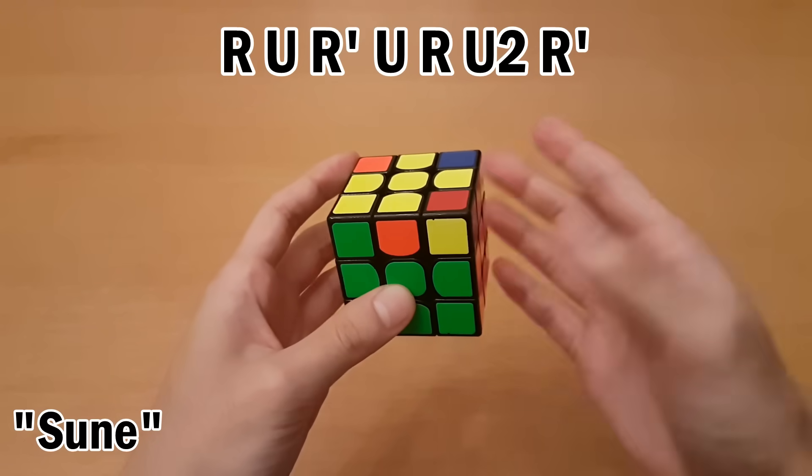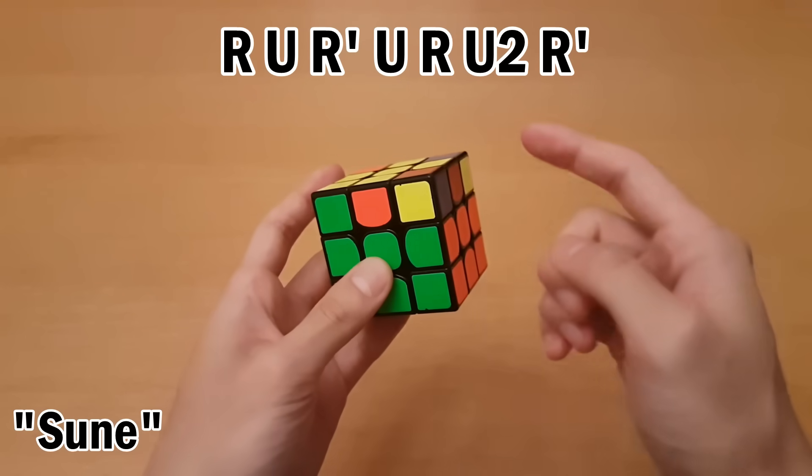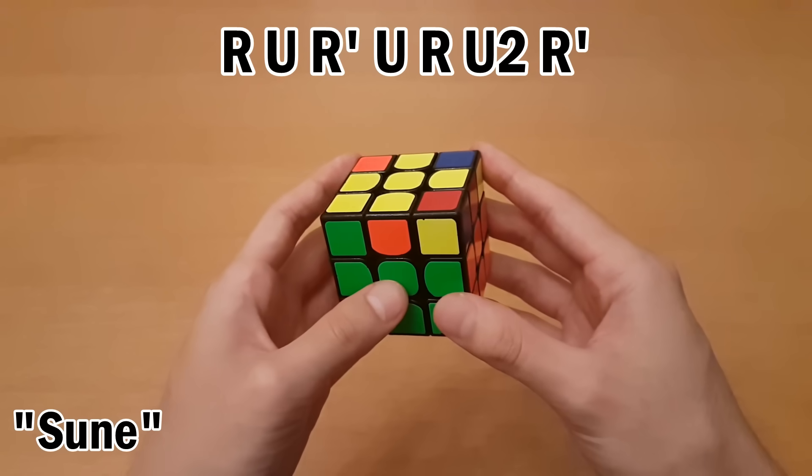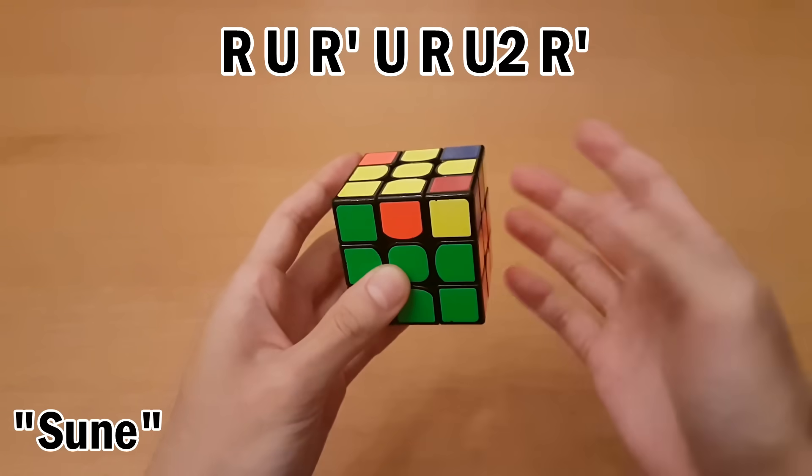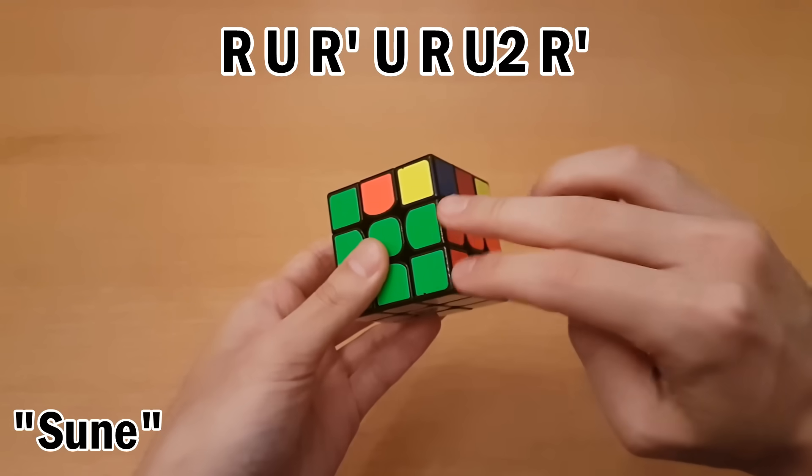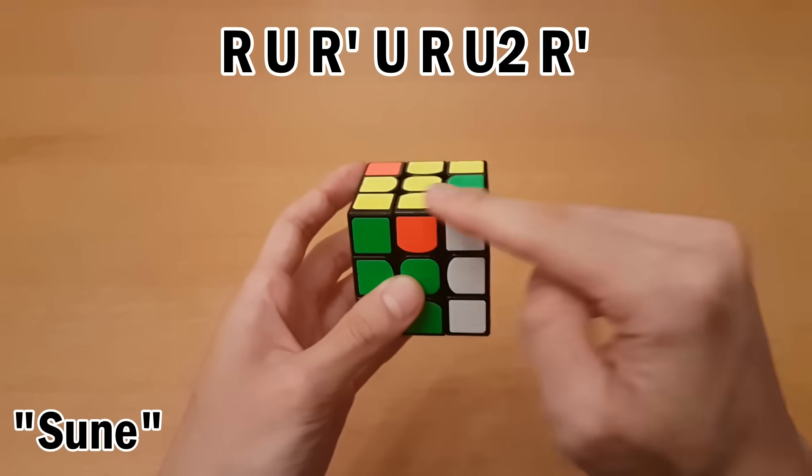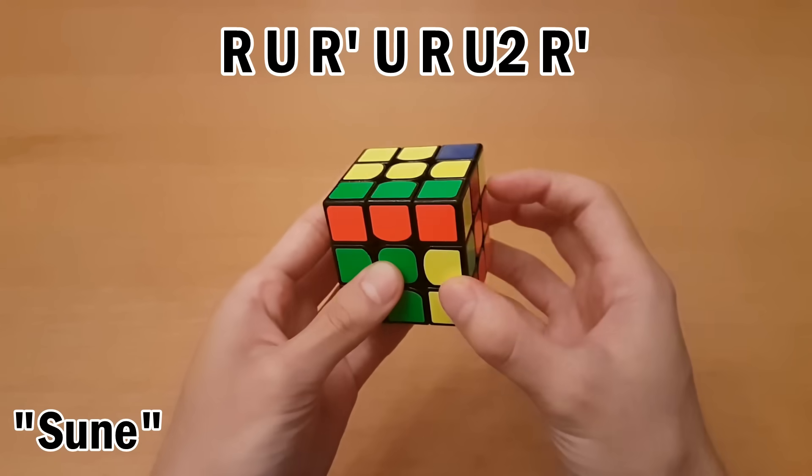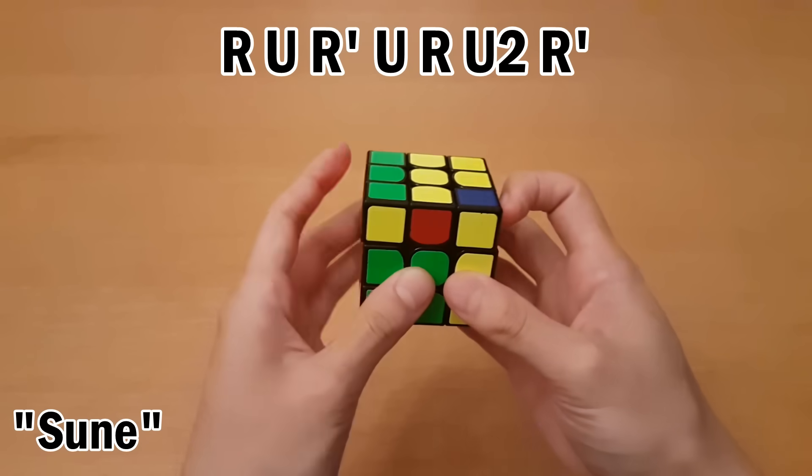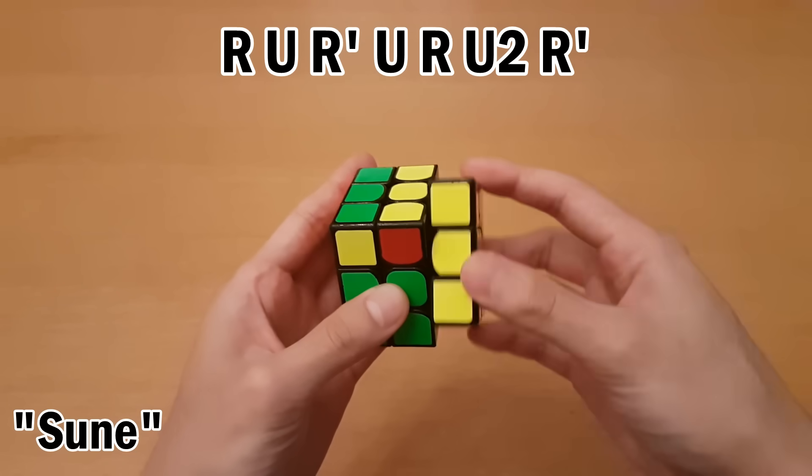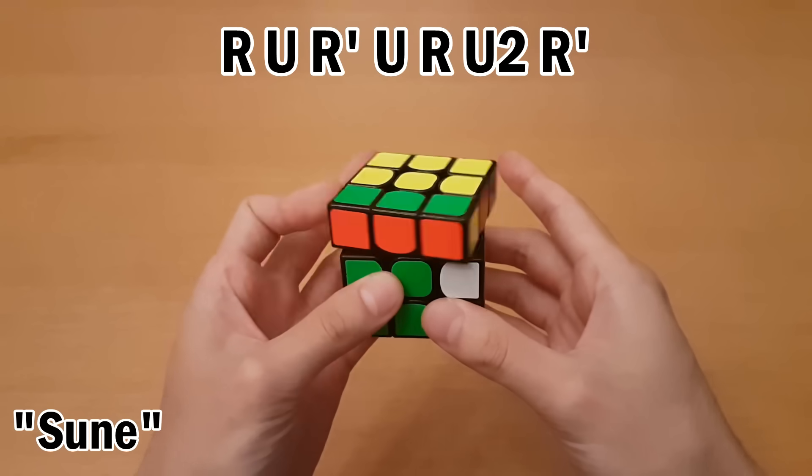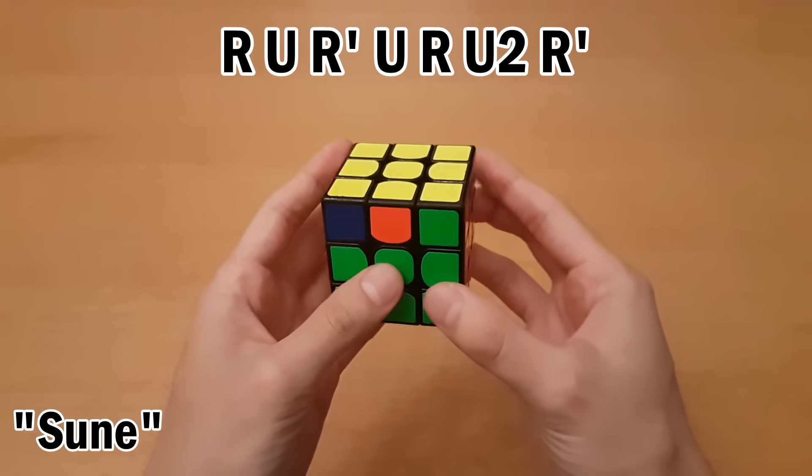You could memorize the algorithm, but it might be easier to just watch how some of the pieces move here. If this sticker facing you is on the right, then this is the right version of this algorithm. We take this front right slot out like this, move it up, move it over, and move this back down, and then move it over again until it's as far away as possible. Now we're going to put it all back in one smooth motion. Just move this up, move this in, two moves, and then move this back down.